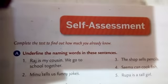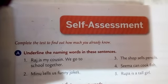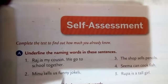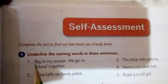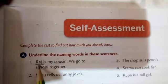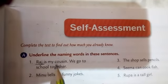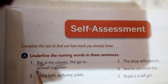Hello students, now I am going to underline the naming word in the following sentences. In the first sentence, Raj is a naming word, and cousin and spoon.